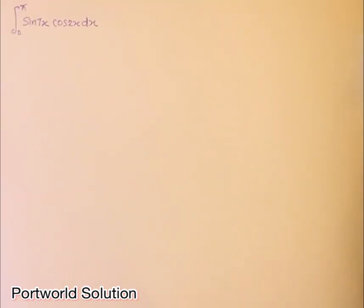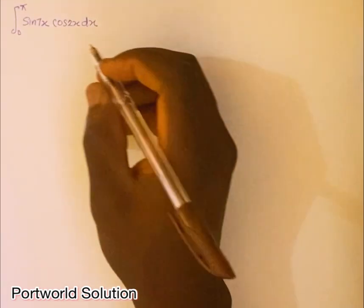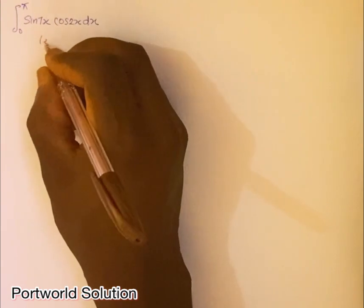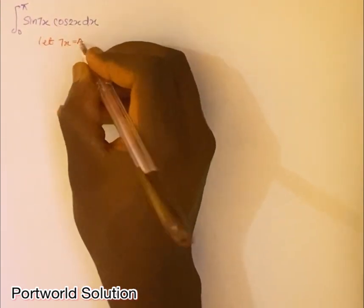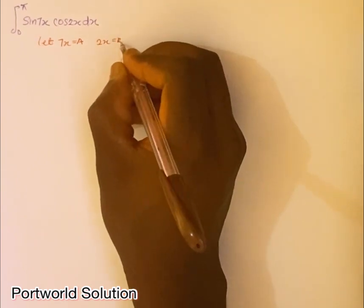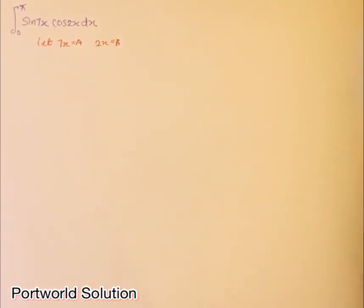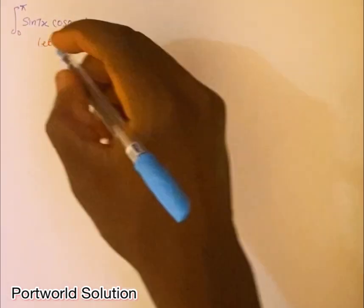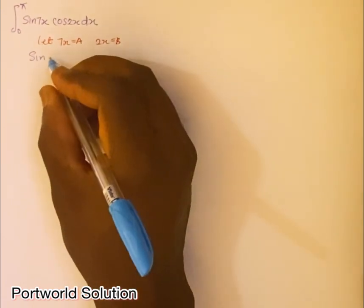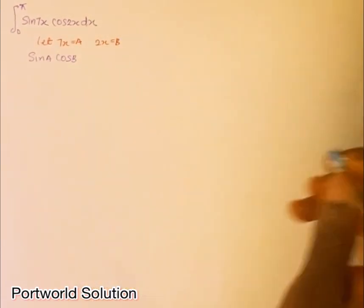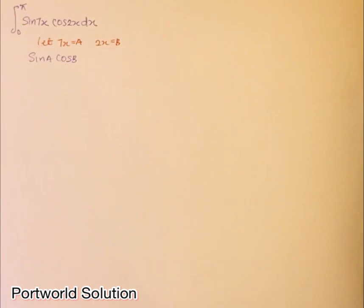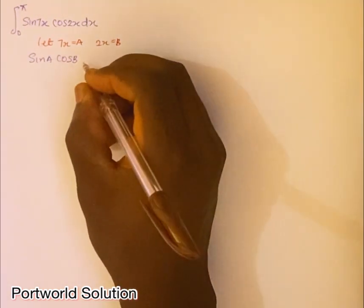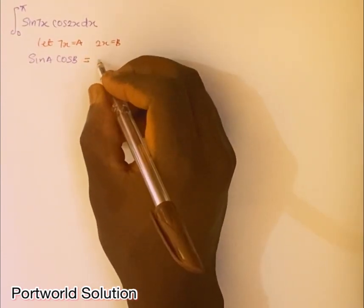Now look at this question — I'm given sin(7x)cos(2x)dx. In this case, I can just say let 7x equal A, and similarly let 2x equal B. So everything becomes sin(A)cos(B). And you can recall from your trigonometry identity that sin(A)cos(B) can be rewritten using a sum formula.